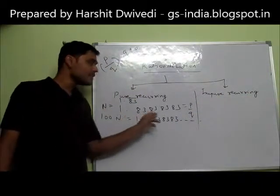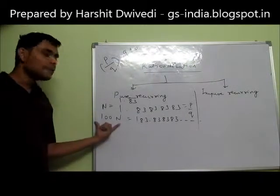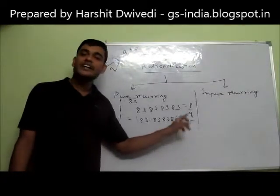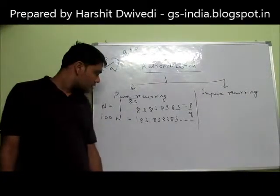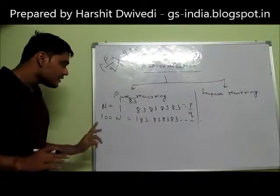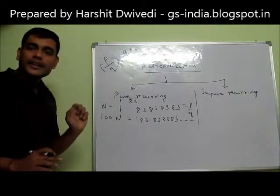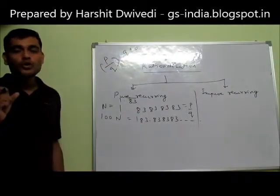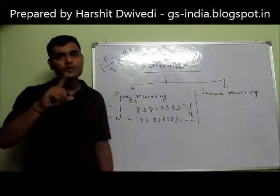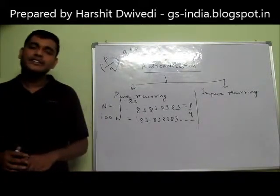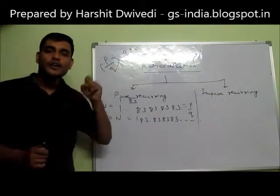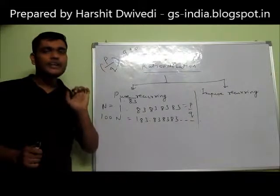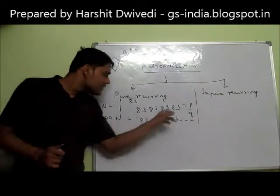So I multiplied n by 100, and it becomes 183.838383... So n = 1.838383838383 and 100n = 183.838383. My objective was to eliminate the decimal part, because in order to rationalize, we have to convert the decimal into the form of p upon q where p and q both are integers and q is not equal to 0. So our first priority is to eliminate this decimal part.